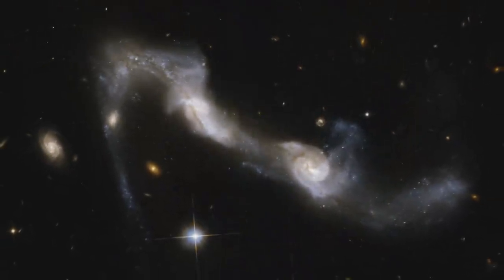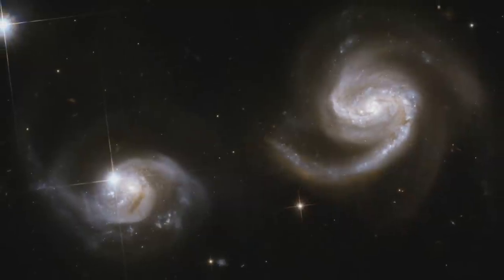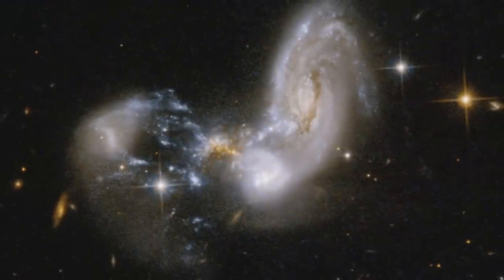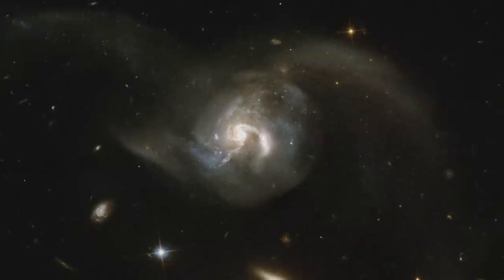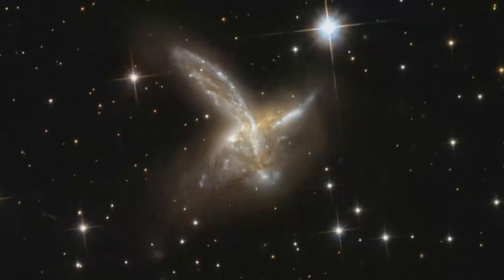The violent merging process strips some of the gas, dust and stars away from the galaxies, and can alter their appearances dramatically, forming huge tails, glowing rings and warped galactic disks.